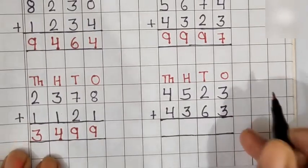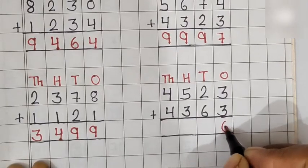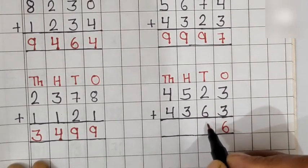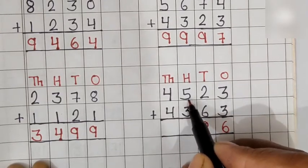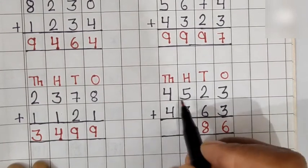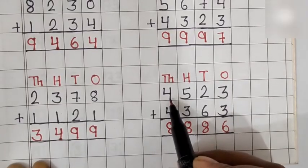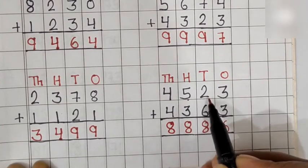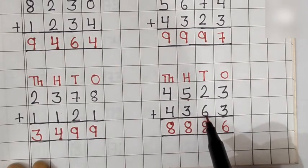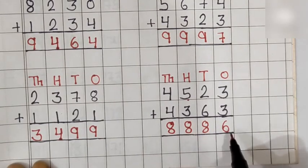Now we solve the last example. 3 plus 3 is equal to 6. 2 plus 6 is equal to 8. 5 plus 3 is equal to 8. 4 plus 4 is equal to 8. So, 4,523 plus 4,363 is equal to 8,886.